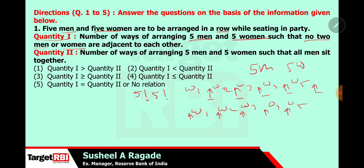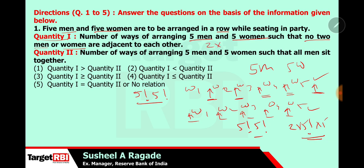This is one arrangement and this is another. In the other arrangement also, the 5 women can be arranged in 5 factorial ways and 5 men in 5 factorial ways. So this plus this is 2 × 5! × 5!. The answer of quantity 1 is 2 × 5! × 5!.